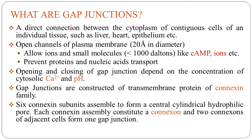Gap junctions are open channels through the plasma membrane that establish direct connections between the cytoplasm of adjacent cells of individual tissues, like liver, heart, epithelium, etc. Since the pore size of the channel has a diameter of 20 angstroms, only ions and molecules less than 1000 daltons in size can diffuse freely through these channels. On the other hand, passage of larger molecules like proteins and nucleic acids is not allowed.